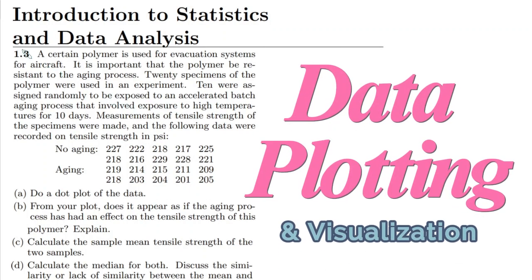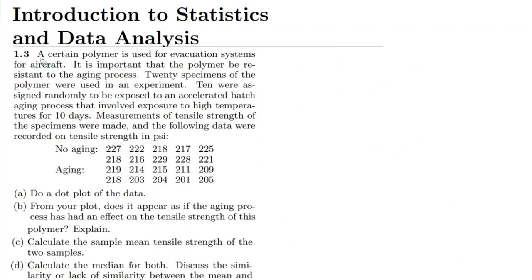Hello guys, I hope all of you will be fine. This is question 1.3 of our book, which is Introduction to Statistics and Data Analysis. Let me read this statement here. A certain polymer is used for evacuation systems for aircraft. It is important that the polymer be resistant to the aging process which occurs with the passage of time.